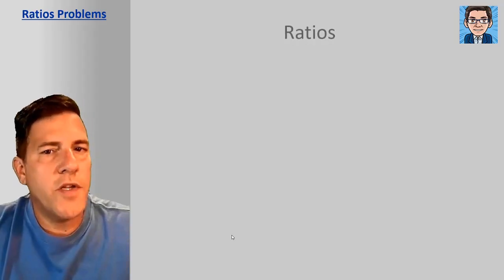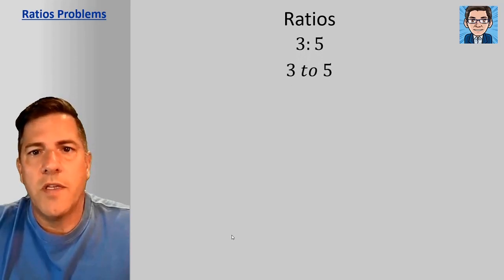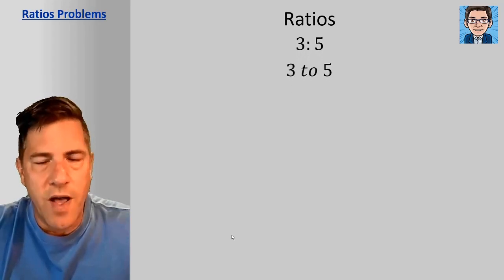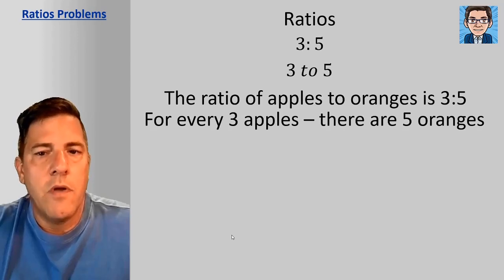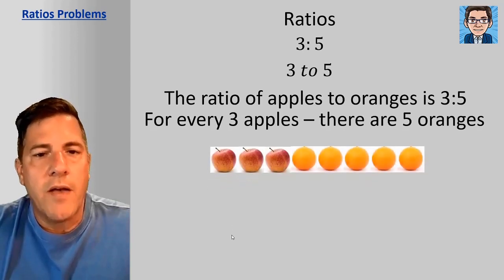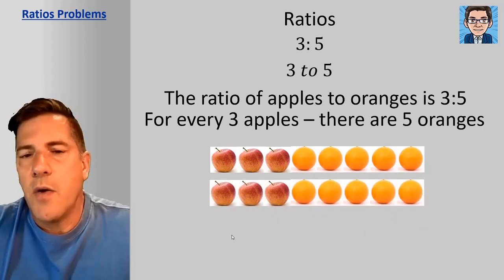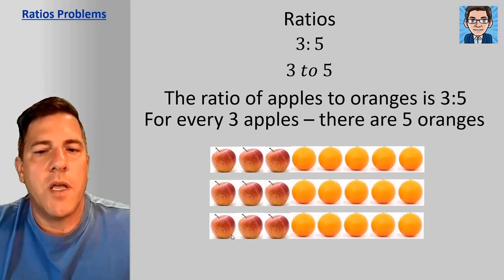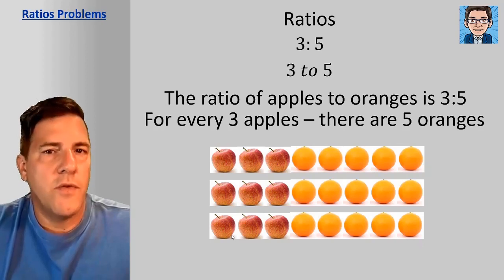Alright, so let's take a look at ratios. A ratio can either be written with a colon or the word to. So both of these things represent a ratio of 3 to 5. So an example would be the ratio of apples to oranges is 3 to 5. For every 3 apples that we have, there is also 5 oranges. Now we don't know how many total we have, so we could have 3 apples and 5 oranges or we could have 6 apples and 10 oranges or 9 apples and 15 oranges. What the ratio tells us is those apples and oranges come in a set of 3 apples to 5 oranges.